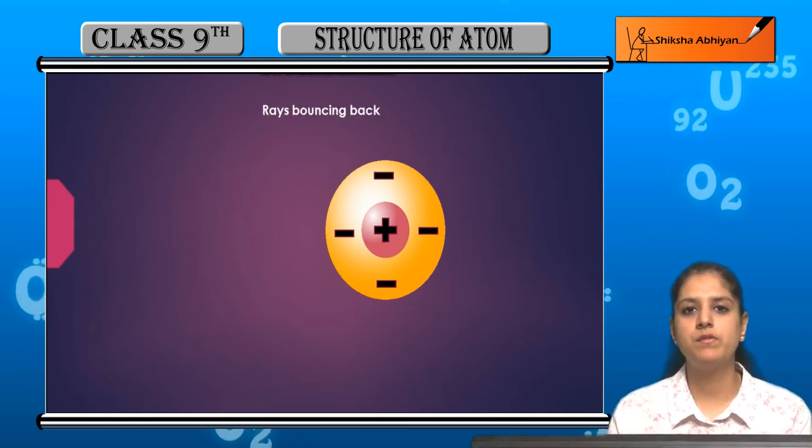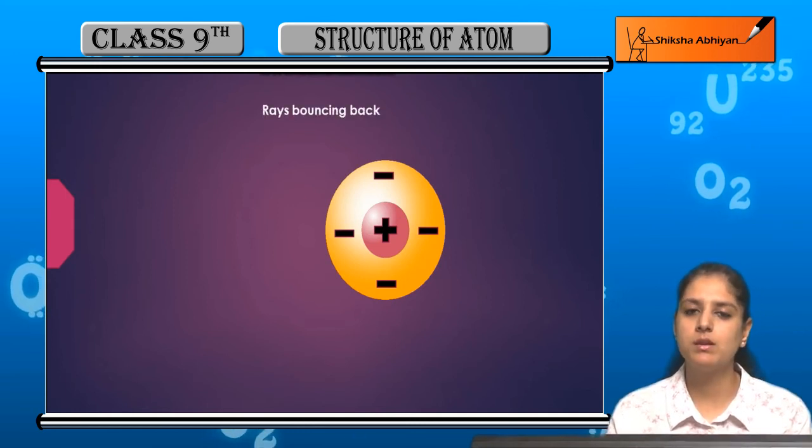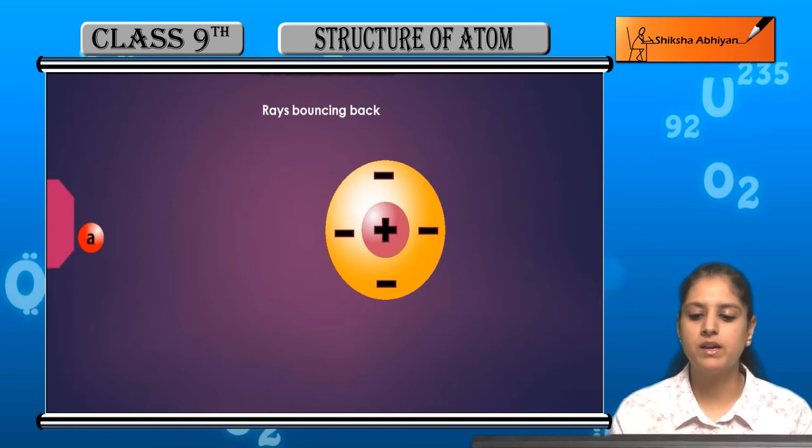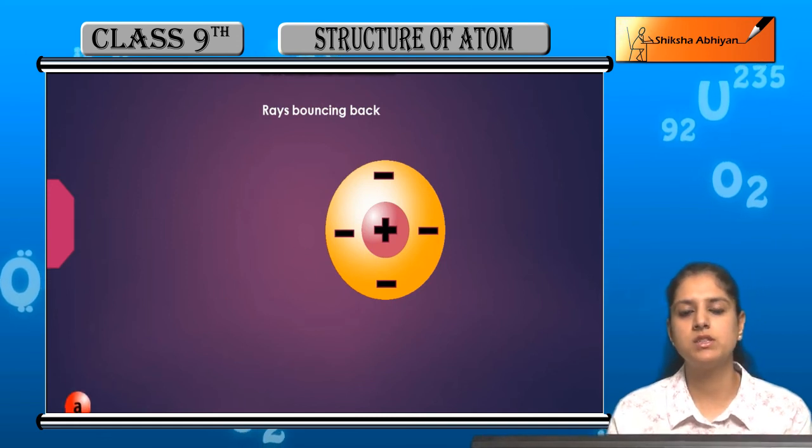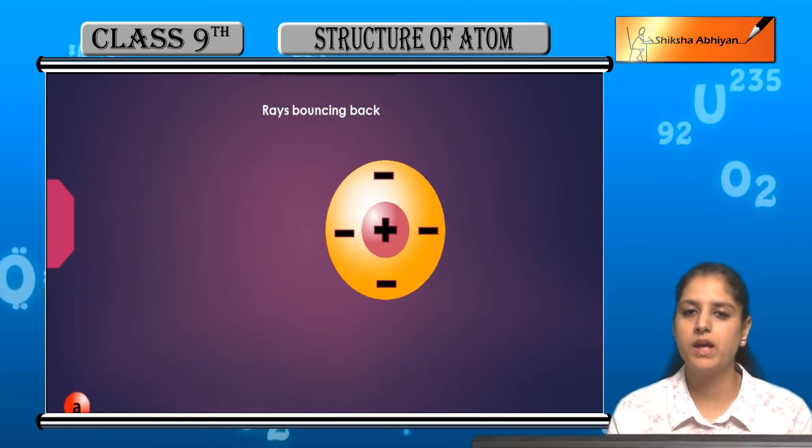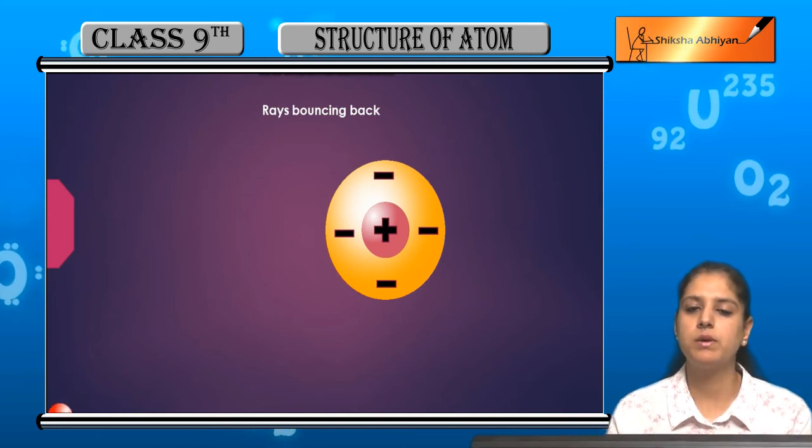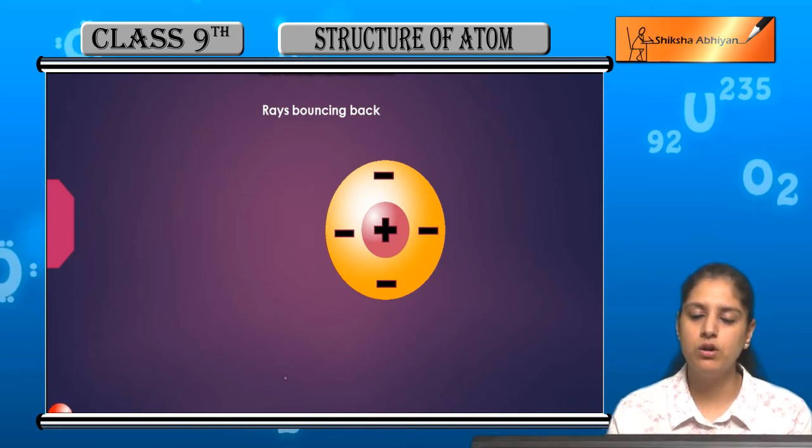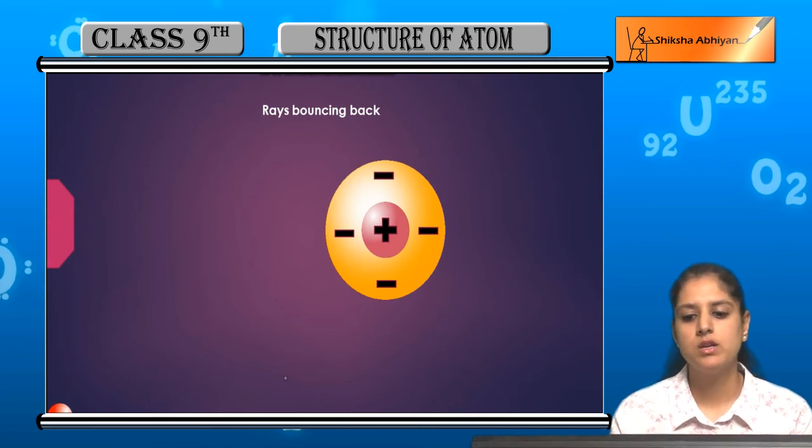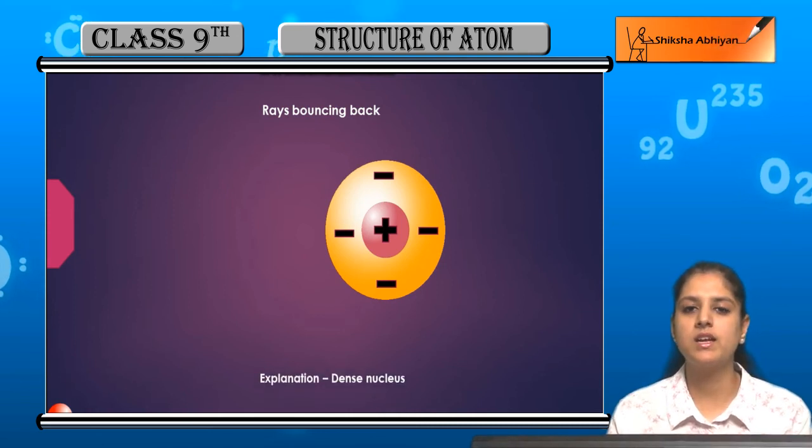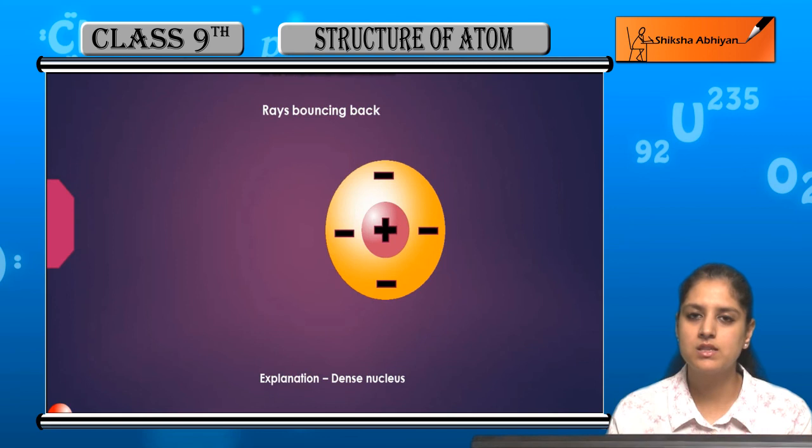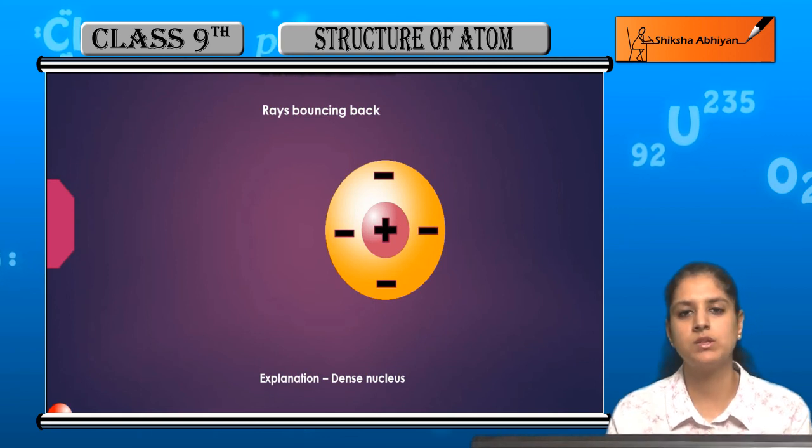The last type of deflection was the alpha particles bouncing back. When alpha particles directly hit the positively charged body, the repulsion is so strong that they bounce back. This explains that there is a dense object inside the atom, which is called the nucleus.